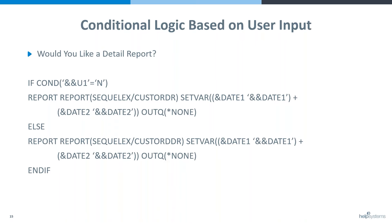Then if they say they want a detail report, we're going to run the detail report with a date range that they've provided. If they don't want a detail report, we're going to run the summary level report with the same date range. We're going to prompt them up front for the question about detail or not and the date range, so it's very easy to take a date range and pass it to multiple commands inside of a script so that you don't have to continually reprompt the user for the same dates.